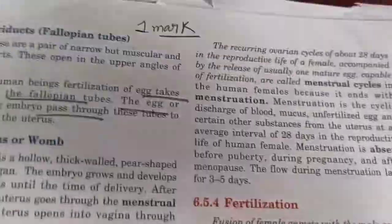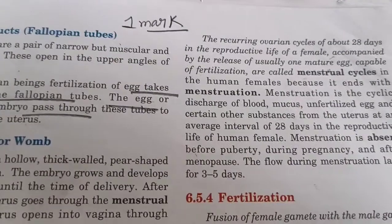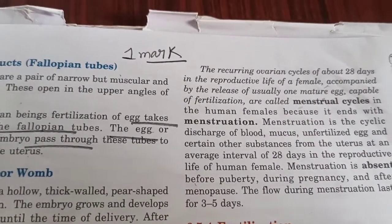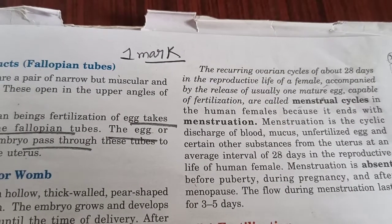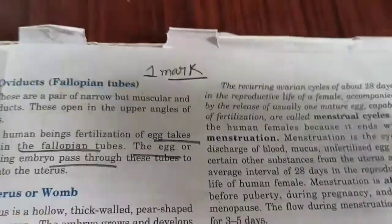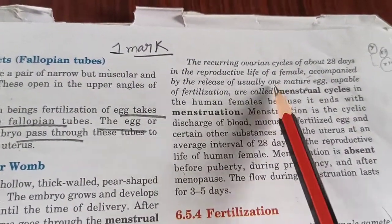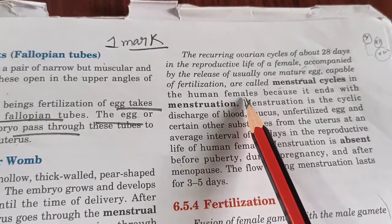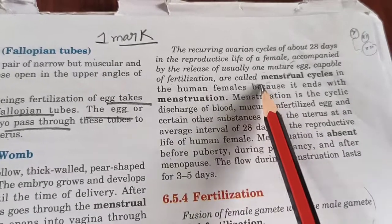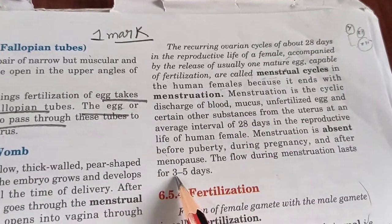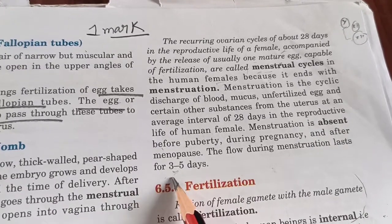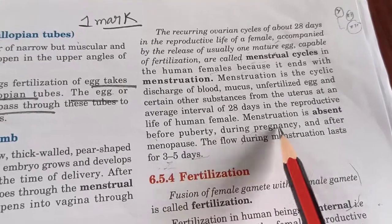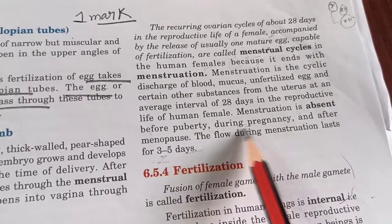The menstrual cycle is 28 days long. It is the cycle of the female reproductive system in which a mature egg is released. When that egg is not fertilized, the egg is released along with the endometrium — the endometrium degrades — and that condition is known as the menstrual cycle. The duration of menstruation itself is 3 to 5 days. If the menstrual cycle is not present, that condition indicates pregnancy.